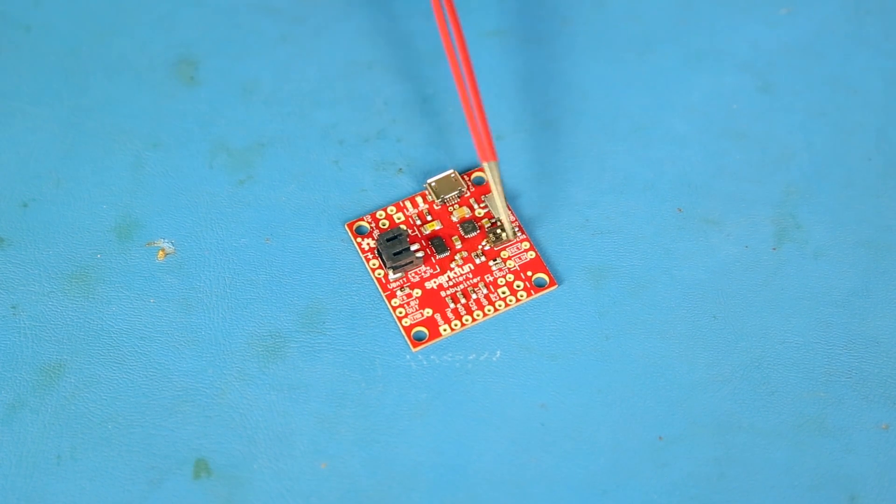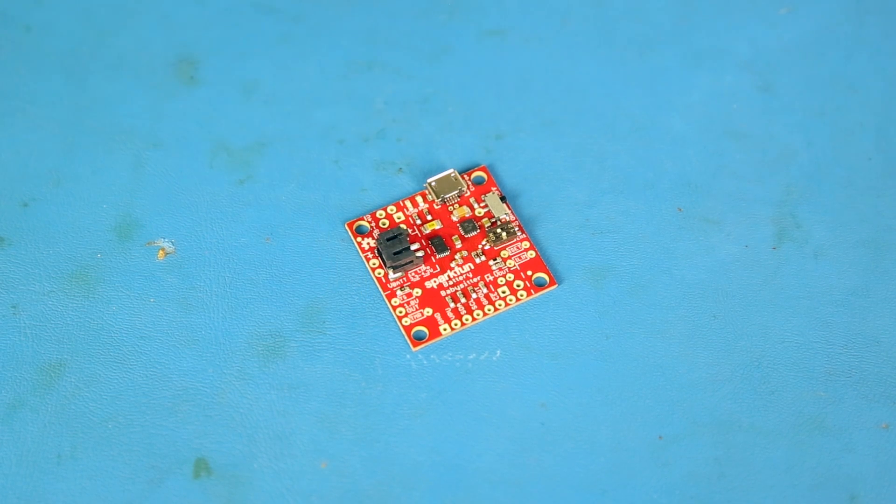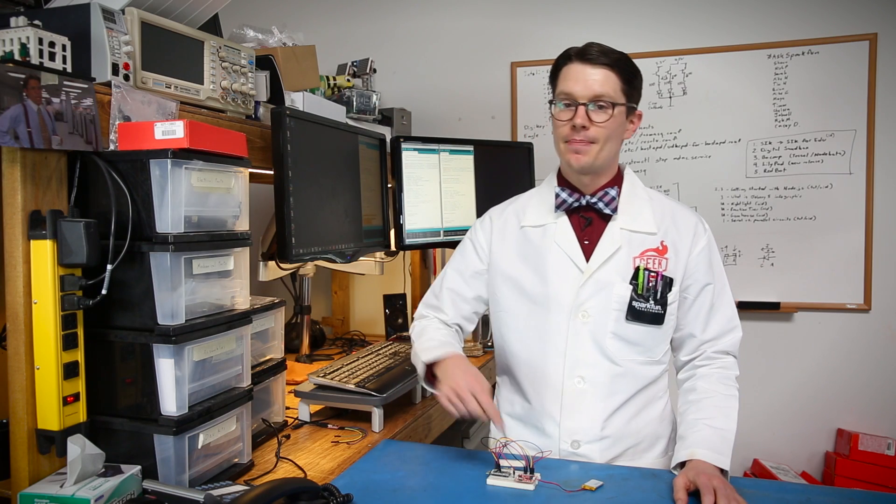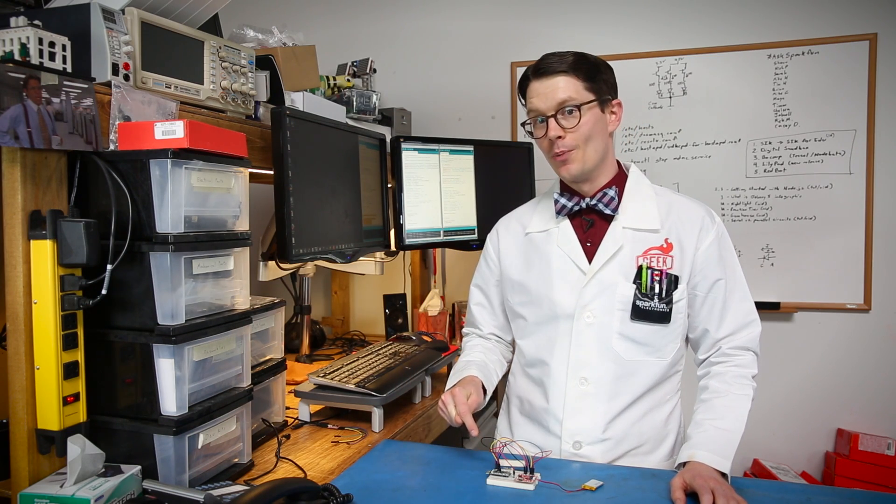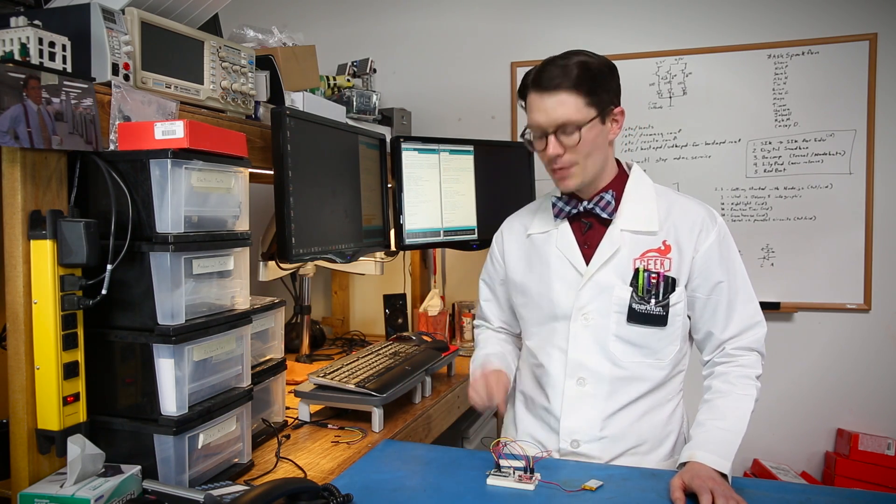The board also has various resistor footprints and solder jumpers that allow for tweaking of other settings. To show all this in action, I put together a quick demo using the battery babysitter, an Arduino Pro Mini, an RGB LED, and a power resistor to drain the battery a little bit more quickly.